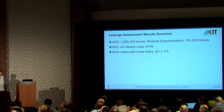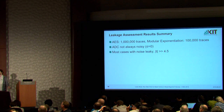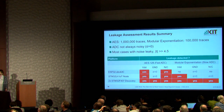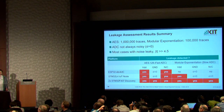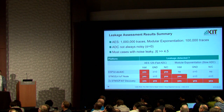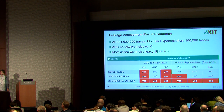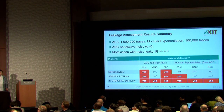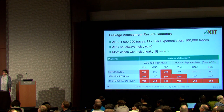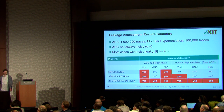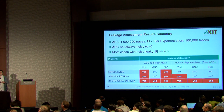Not in all cases was the ADC noisy — if the ADC gives a flat line, there is no change in data and nothing to gain. But in most cases where there was ADC noise, the data was leaky, with t-values way beyond the 4.5 threshold. In summary, for various configurations, each board showed leakage in at least one case. The ADC was also run at a faster frequency for AES than for modular exponentiation, which may play a role in the results.